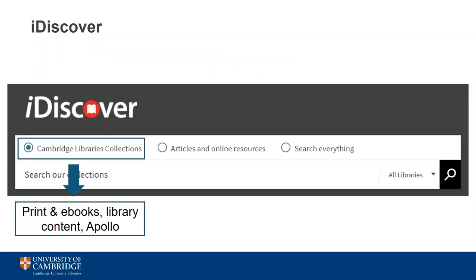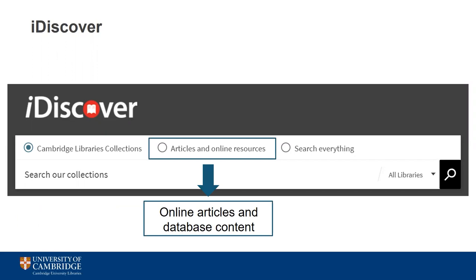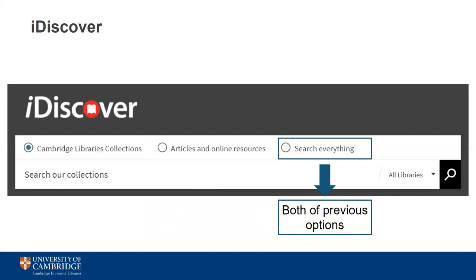The first option is to search Cambridge Library's collections. This will look for printed books, ebooks, material from Apollo, and physical content like archives and objects. The important thing to note is that while it covers a lot, it doesn't cover electronic journals and articles unless there's a version in Apollo. For that type of material, you'll want to use the second option — articles and online resources — which looks at e-journals and content from the databases the university subscribes to. Searching for article titles directly can be a bit hit and miss, so the best thing to do is search for the publication title and then go in through the volume number or date. The final option combines the previous two searches to search everything.